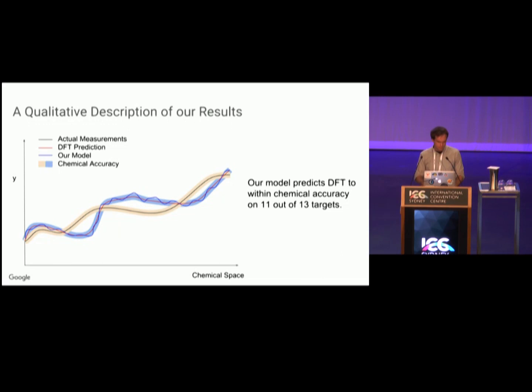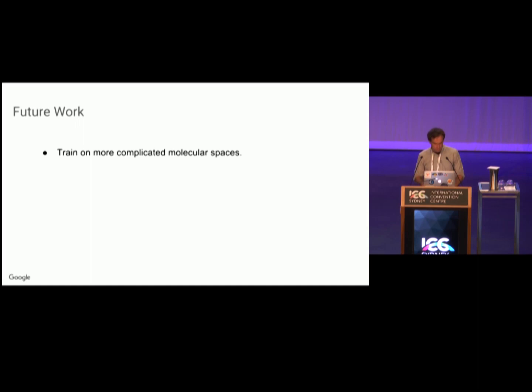Just to wrap up, future work: train on more complicated molecular spaces, do more accurate simulations. Material science has infinite periodic graphs, which would be really cool to try. An important one is to develop models which are able to generalize to larger graphs than appear in the training data. Right now, if we train on graphs of size at most 30 and test on graphs of size 31, we don't do very well.